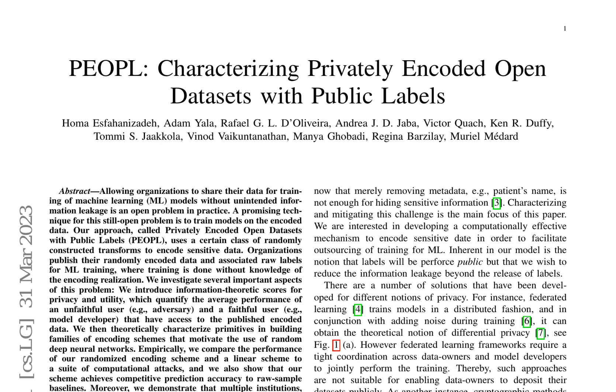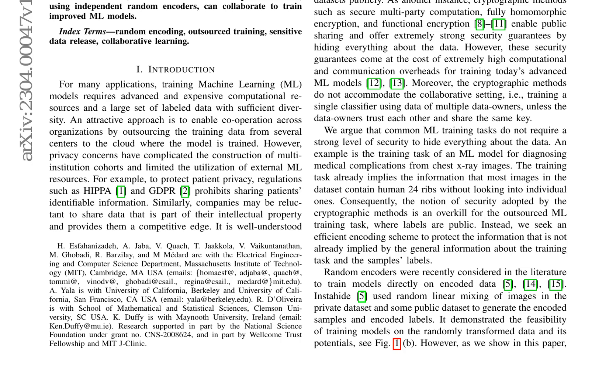PEOPL uses randomly constructed transforms to encode sensitive data, allowing organizations to publish their encoded data and associated raw labels for ML training. The method is designed to protect information beyond what is already implied by the general information about the training task and sample labels.